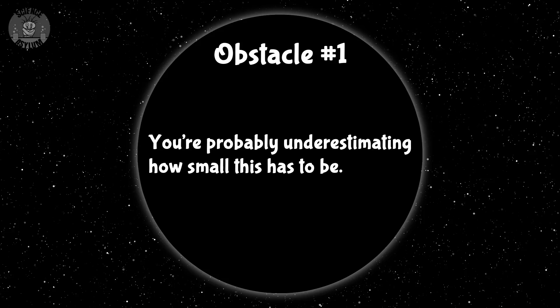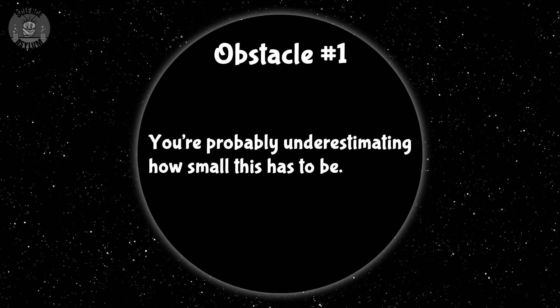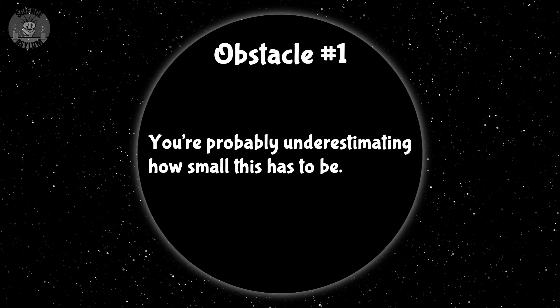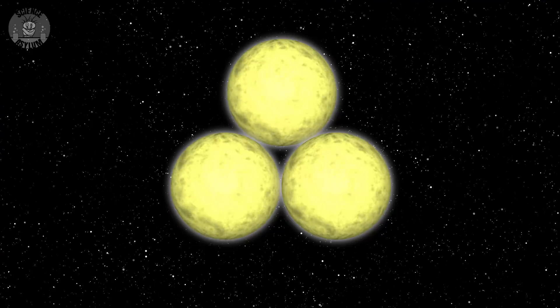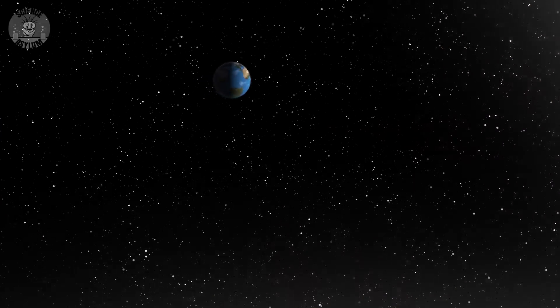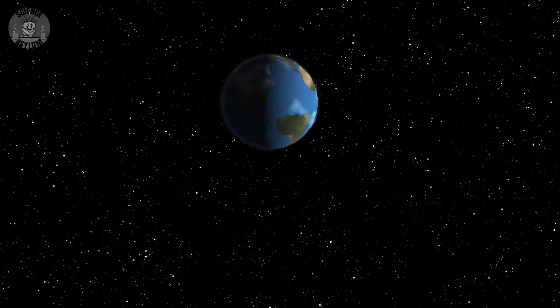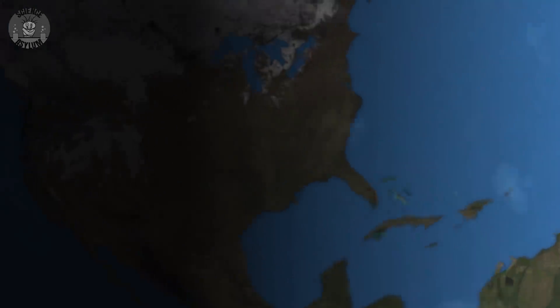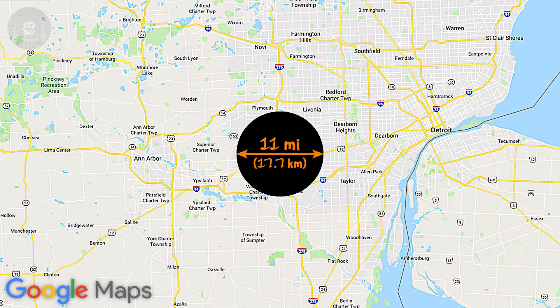Obstacle 1. You're probably underestimating how small this has to be — it's a lot smaller than most people think. This is three Suns. This is a black hole with three Suns inside it. That is some serious compression. No wonder it takes three Suns worth of gravity.